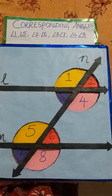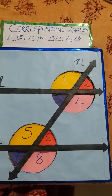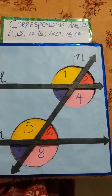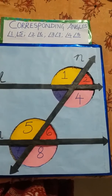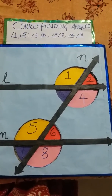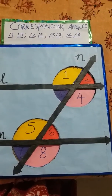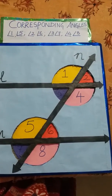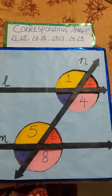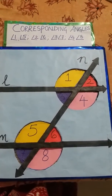Now we'll see corresponding angles. Corresponding angles are on the same side of the transversal line and in the same position relative to each parallel line. On the left side of transversal n: 1 and 5 are corresponding. The corresponding angle pairs are 1 and 5, 2 and 6, 3 and 7, and 4 and 8. I have used similar colors for equal corresponding angles.